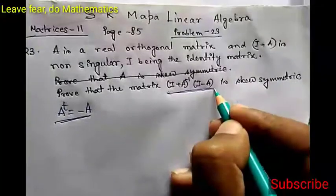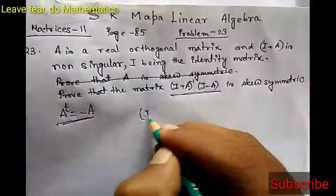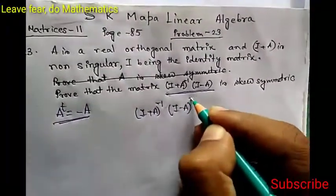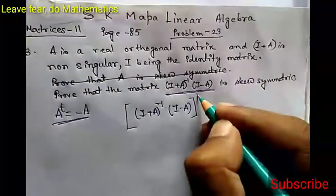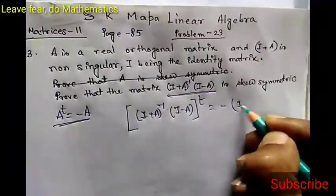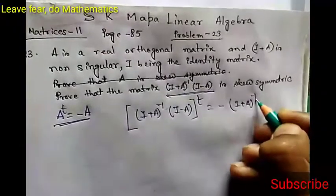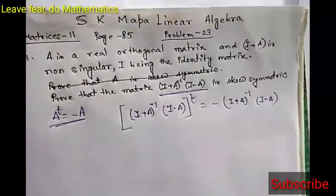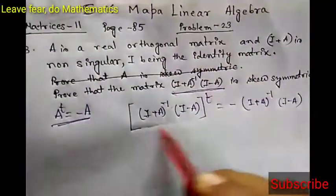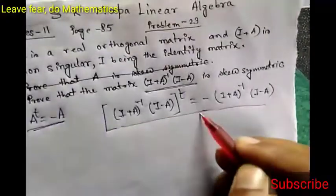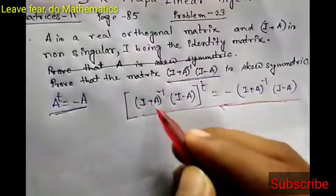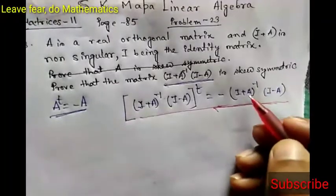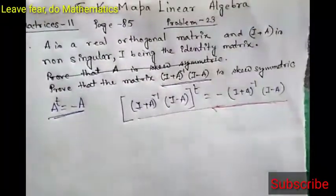We have to prove that this matrix is skew symmetric. That means we have to prove that (I plus A) inverse times (I minus A) whole transpose equals minus of (I plus A) inverse into (I minus A). So we have to prove this.